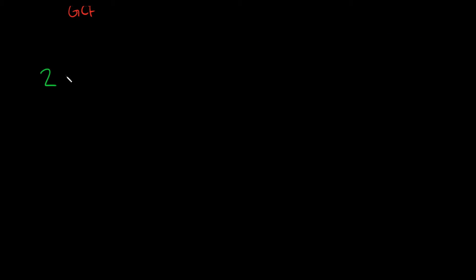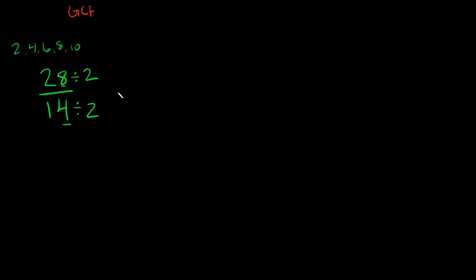Let's do another example. What if I had 28 over 14? When the numbers get a little bigger it's not always clear. But we can see that both numbers are even — this one ends in four, this one ends in eight. With even numbers you can just divide by two. So we divide the top by two and the bottom by two. Twenty-eight divided by two is 14, and 14 divided by two is seven. Is this as reduced as possible? Well, seven is prime — but no, this is not as reduced as possible.